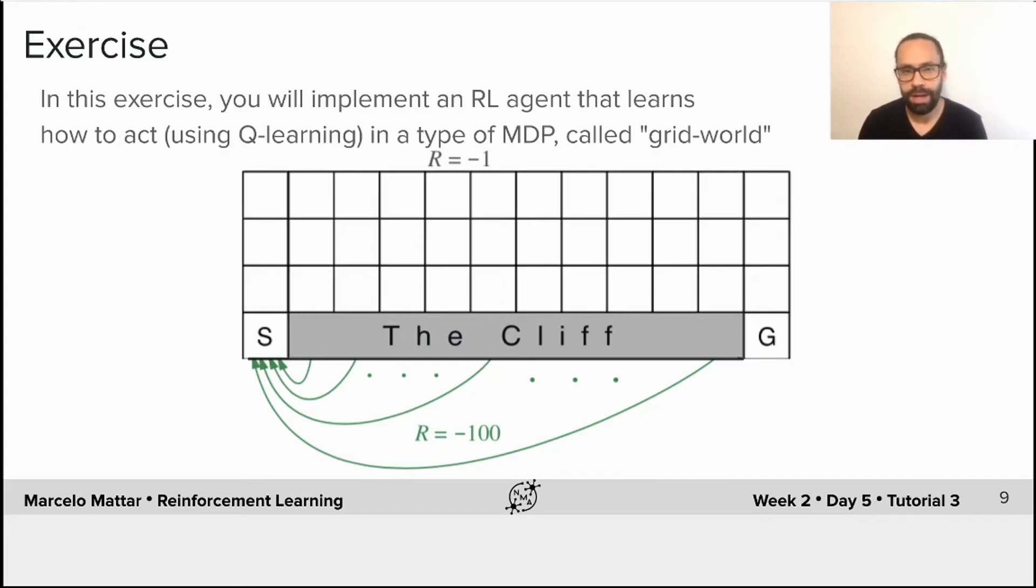So grid world is actually a sequential decision problem, and it's used as a model for spatial navigation. Each square here is a spatial location, and at each one of these states the agent needs to choose in which direction to move. In this specific grid world that we're looking at, and it's nicknamed cliff world, the agent starts at the location S and it has to choose a series of actions until it reaches the goal location G.